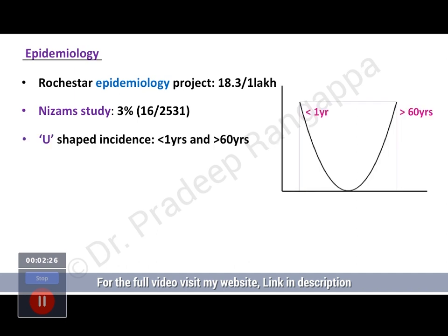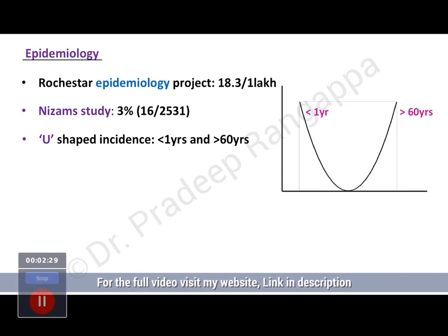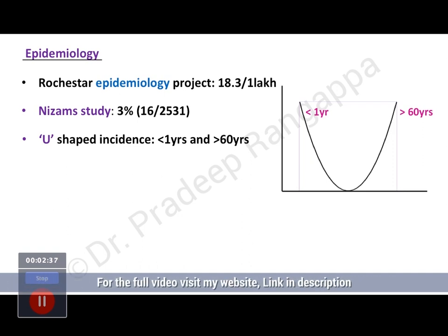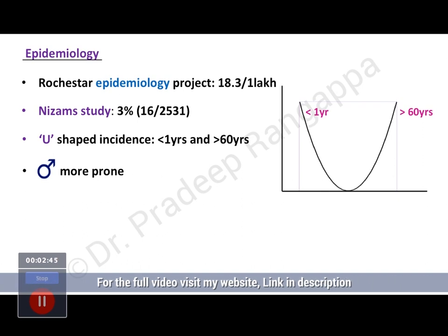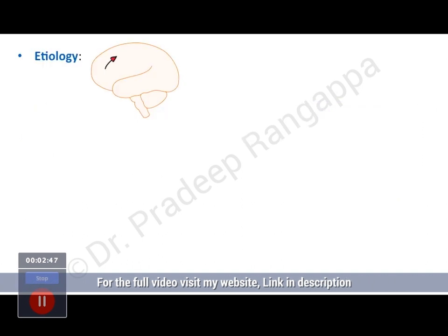Status epilepticus typically has a U-shaped incidence — it is maximum in children under 1 year and in those above 60 years, with the incidence slowly coming down in between. Males appear to be more prone to developing status epilepticus.